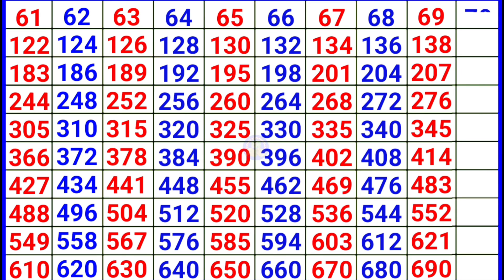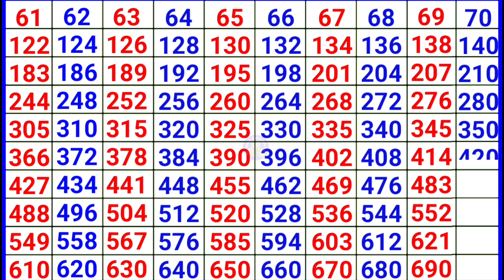Next 70. 70 × 1 = 70, 70 × 2 = 140, 70 × 3 = 210, 70 × 4 = 280, 70 × 5 = 350, 70 × 6 = 420, 70 × 7 = 490, 70 × 8 = 560, 70 × 9 = 630, 70 × 10 = 700.